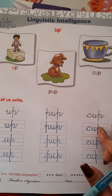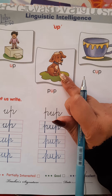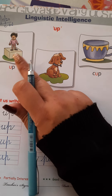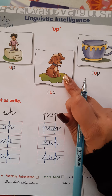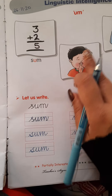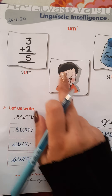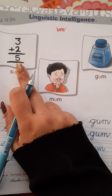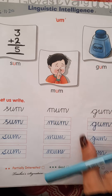UP sound words: up, pup, cup. Up, pup, cup. UM sound words: sum, mum, gum. Sum, mum, gum.